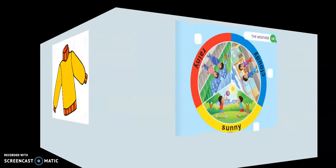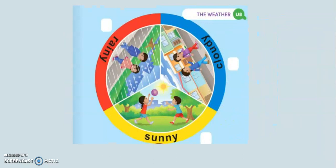Now look at the worksheet, page number 109 — The Weather. And what will you do? Listen and write a number. Are you ready? Okay, listen. Number one: it's a sunny day. Number one: it's a sunny day. Number two: it's a cloudy day. Number two: it's a cloudy day.